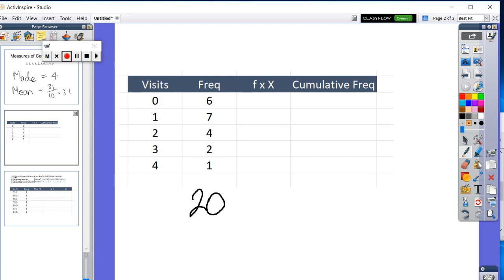So six plus seven plus four plus three means that we've got 20 students. So we'll need that as well. And then we just need to then determine what all of these scores actually add up to. Six kids went zero times, so you can put a zero in there. Seven students went once. So I'm just multiplying. Four students went twice. Two students went three times. And one student went four times.